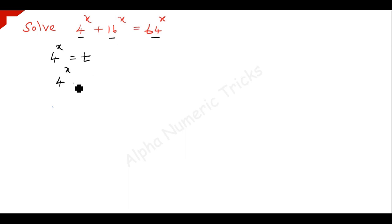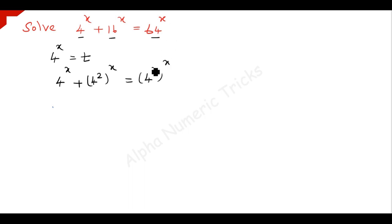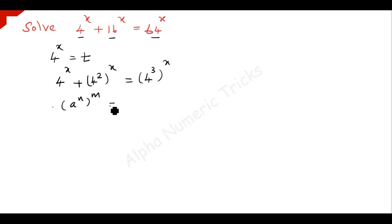You can write this as 4 to the power x plus (4 squared) to the power x, which equals (4 cubed) to the power x. Before substituting, use the law that (a to the power n) to the power m can be written as (a to the power m) to the power n — you can interchange the powers here.